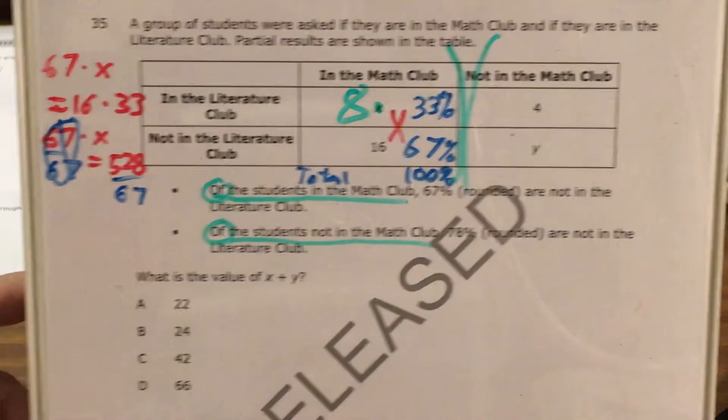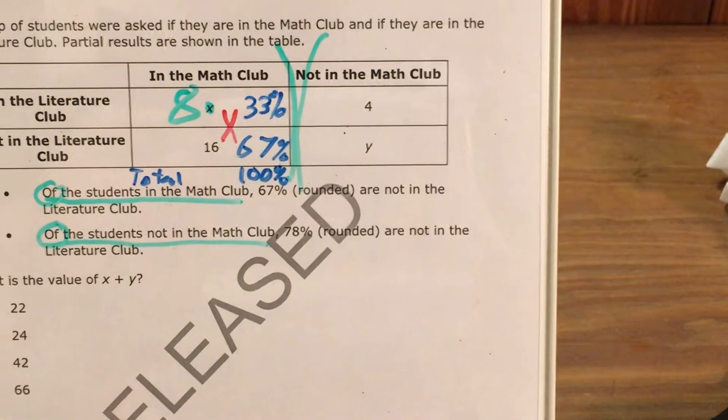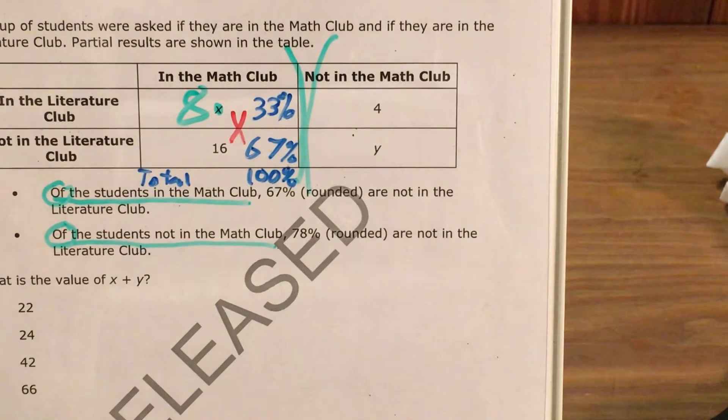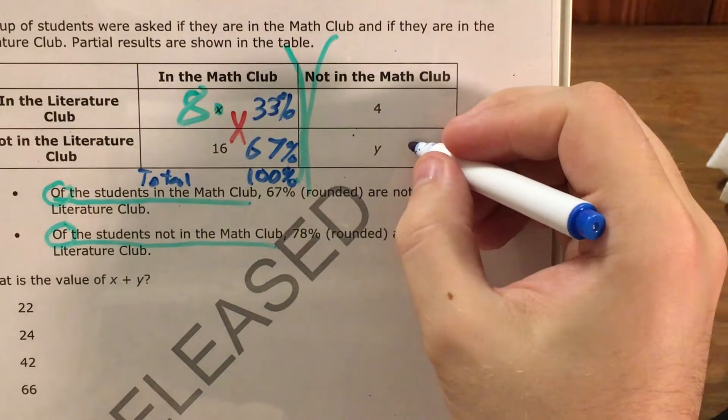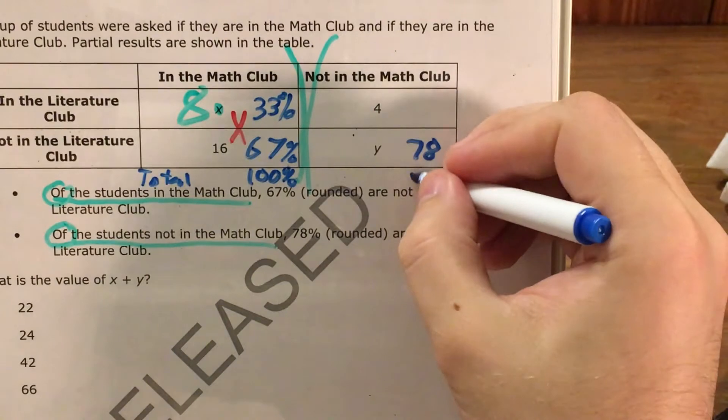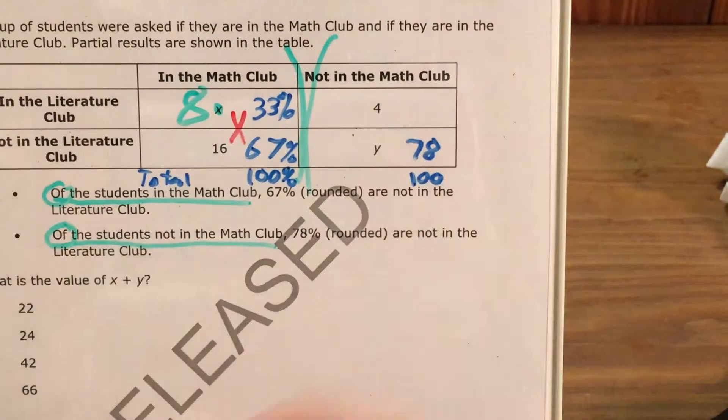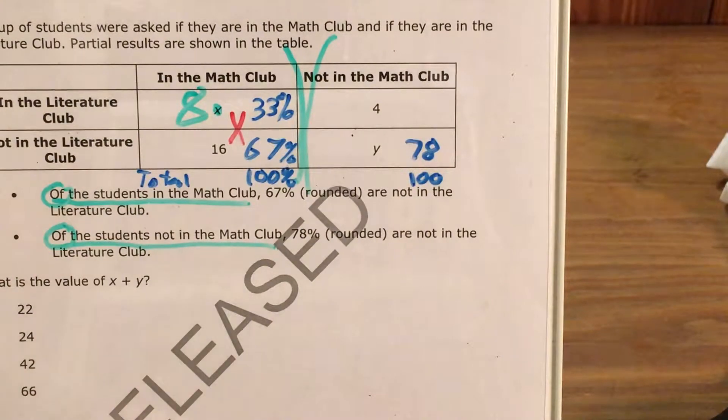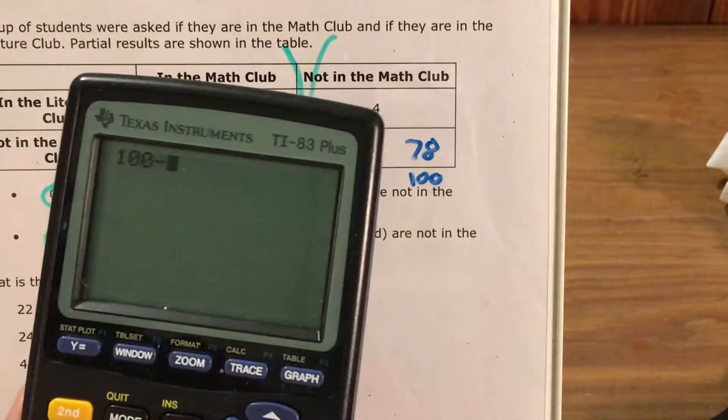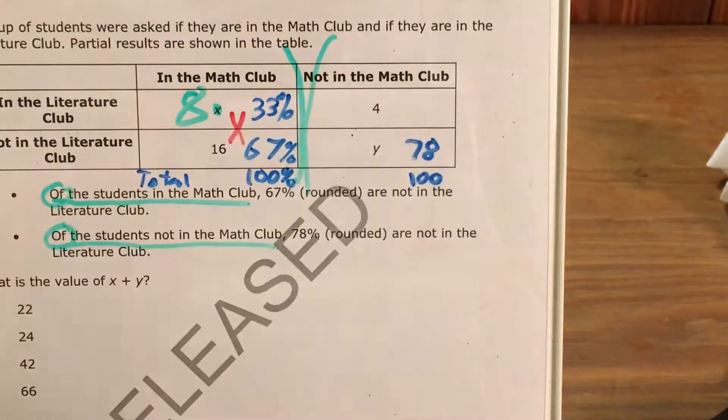Now I come over to the column of students not in the math club, and I use a very similar process. It says that 78% of the students not in the math club are not in the literature club. I know that my total is 100, which means I do 100 minus 78 to figure out what's in this box in terms of percentage. And 100 minus 78 is 22.